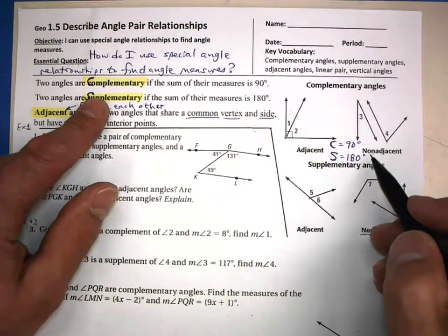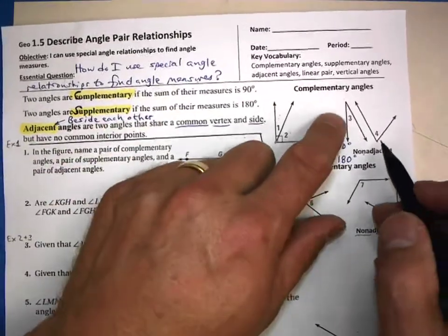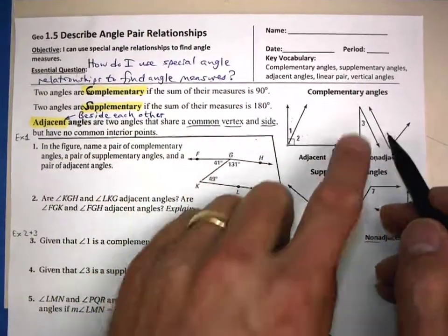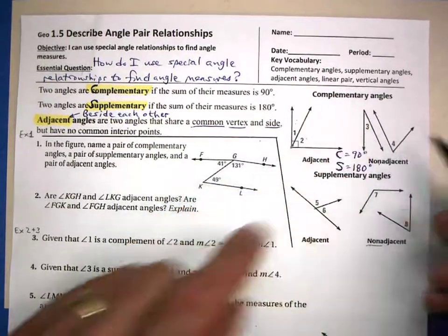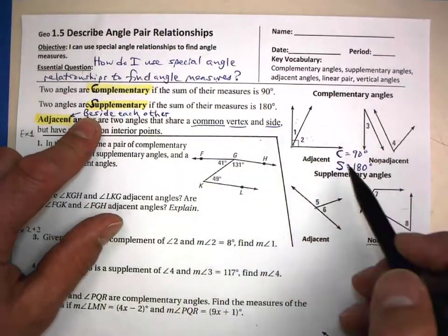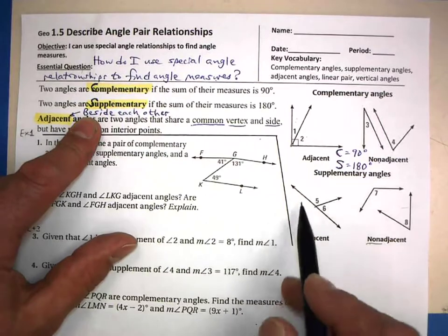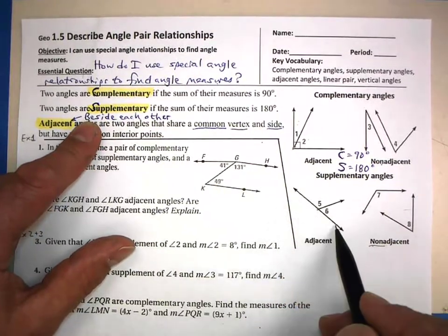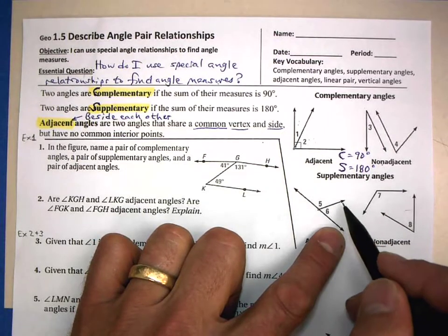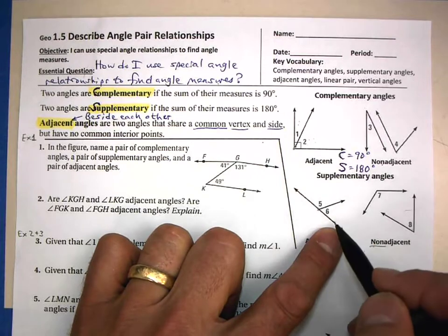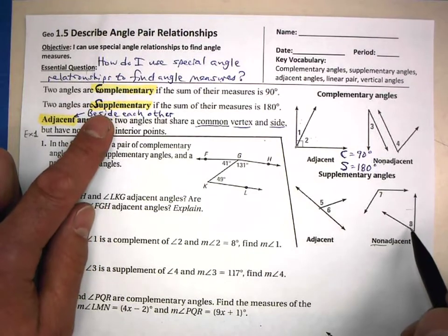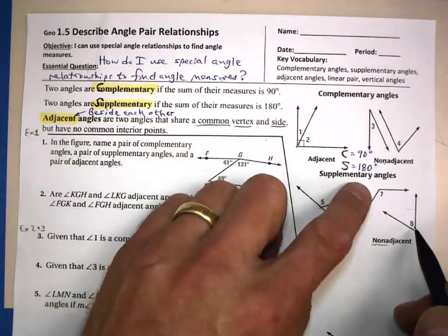You can also have non-adjacent complementary angles — they don't share the same vertex, but they do add up to 90 degrees. There's also supplementary angles, which you're probably familiar with: two angles are supplementary if they add up to 180 degrees. Typically you see this as a line with a ray drawn from it, forming a straight angle of 180 degrees.